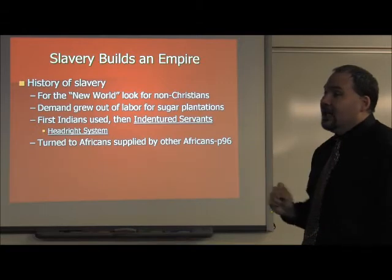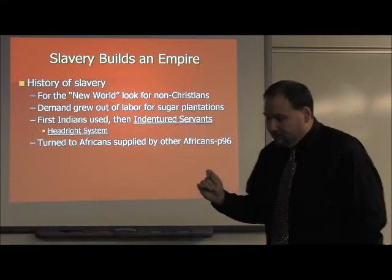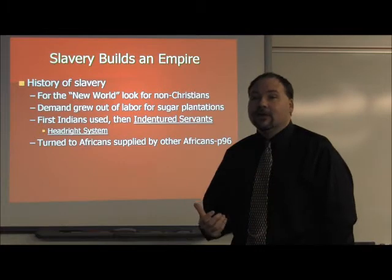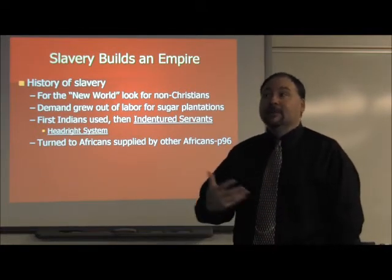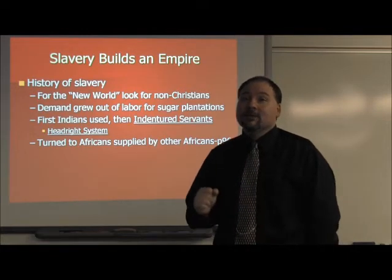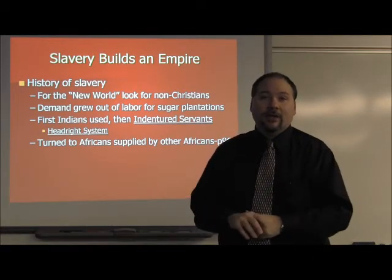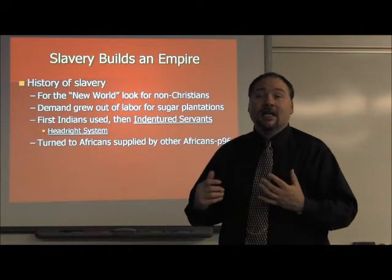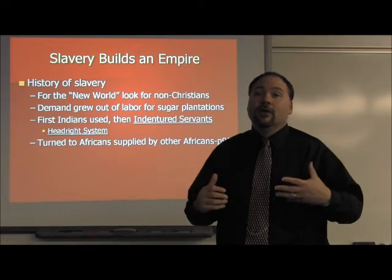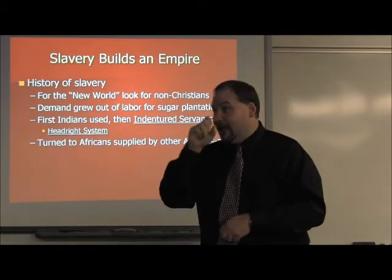Page 96 in your book tells you where most slaves were coming from — West Africa, which was an agricultural region, so enslaved people had some knowledge of crops and planting. It also explains how slaves were captured, which was often done by other Africans. Rival tribes would make contact with Europeans and agree to supply slaves in exchange for guns, which helped them eliminate rivals and expand their territory and power.